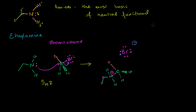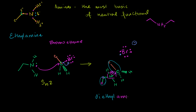We could redraw this as NH2 with two ethyl groups attached. So we call this diethyl - one ethyl and two ethyls. You might want to call it diethylamine, but it's not a derivative of ammonia anymore - it's a derivative of ammonium, because it's now positively charged. This nitrogen now has four bonds. So this is diethylammonium.